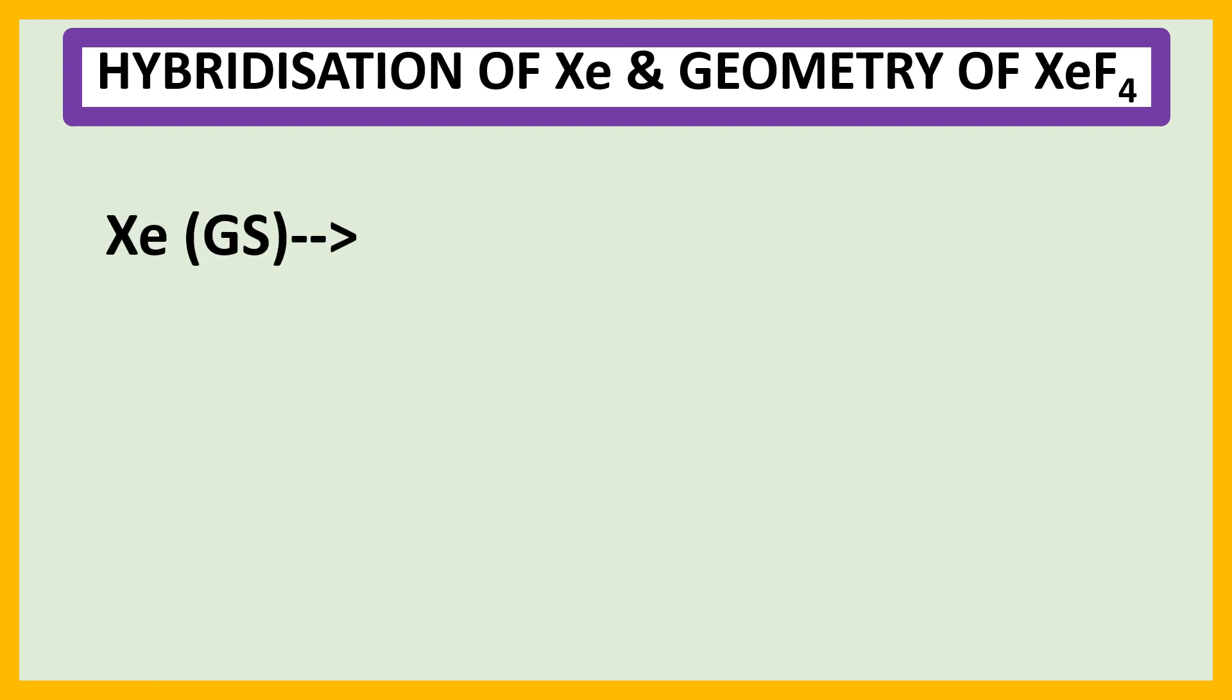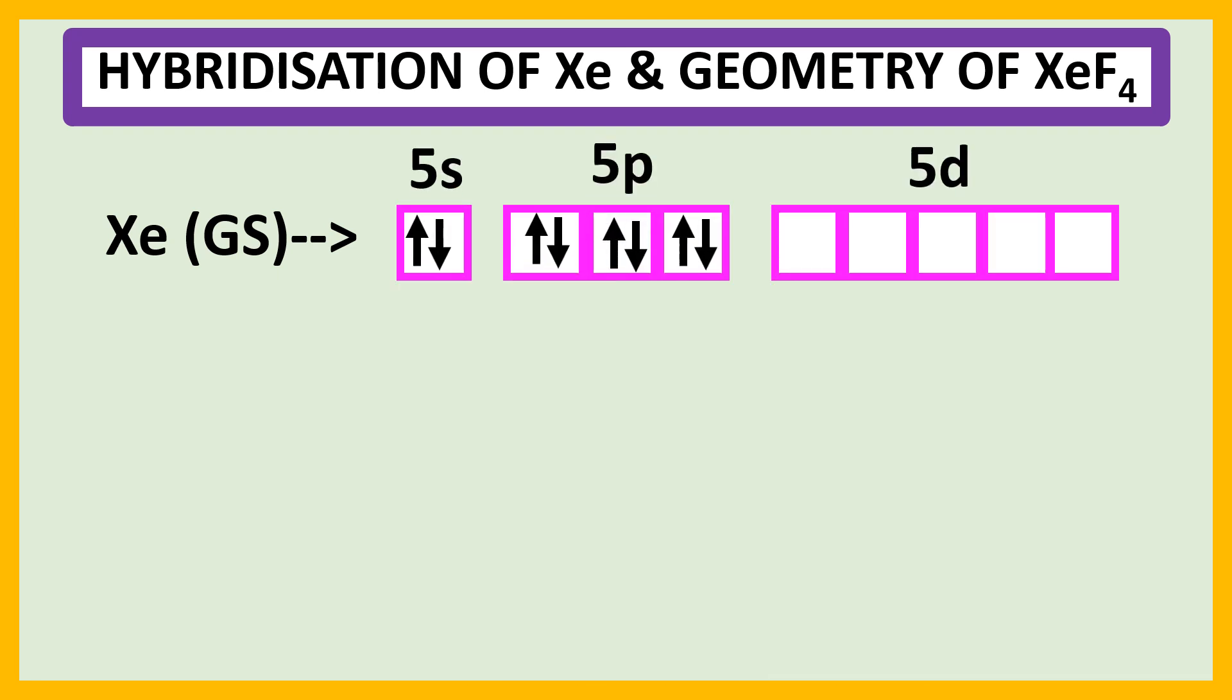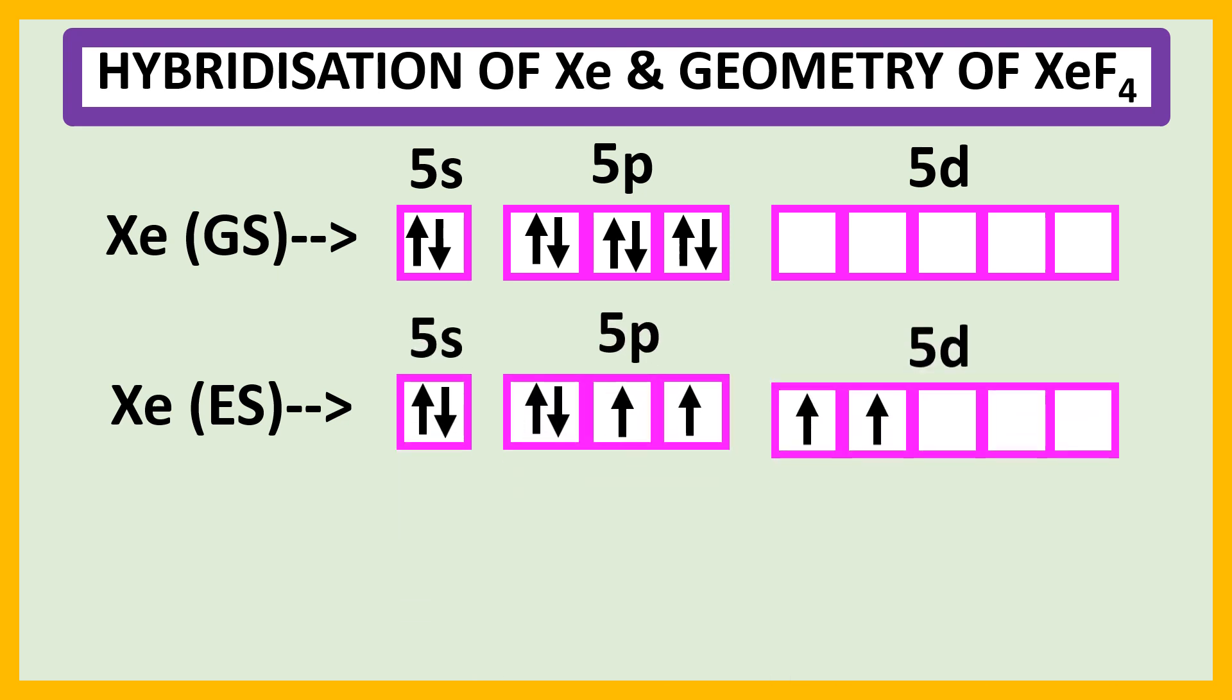Ground state outer shell electron configuration of xenon is 5s2, 5p6, 5d0 and the excited state outer shell electron configuration of xenon is 5s2, 5p4, 5d2.